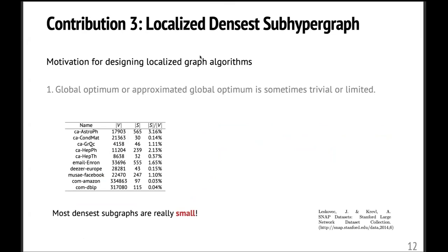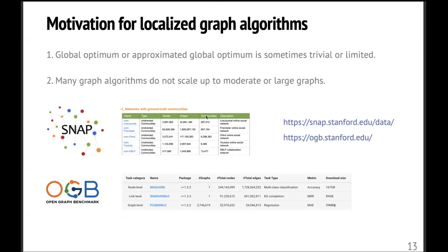And why do we want to study localized graph algorithms? Here I listed two main motivations. The first one is a lot of global optimums or approximated global optimums, they are trivial or limited. So here I do some simple experiments. I solve the densest subgraph exactly on 10 graphs from the SNAP data set. And from the result, we can see most of the densest subgraphs, they are really small. So usually taking less than 1% of the whole graph. So this means if you only compute the global optimum, then you will get super limited information.